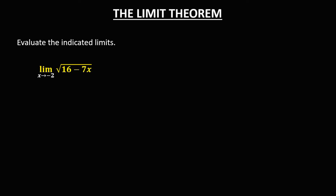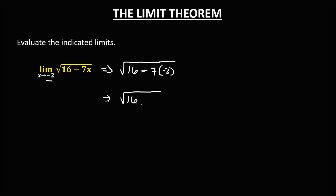For an equation that contains a radical, using direct substitution as x approaches negative 2, we have the square root of (16 minus 7 times negative 2). Simplifying: negative 7 times negative 2 is positive 14, so we have 16 plus 14 inside the radical. The limit is equal to the square root of 30.